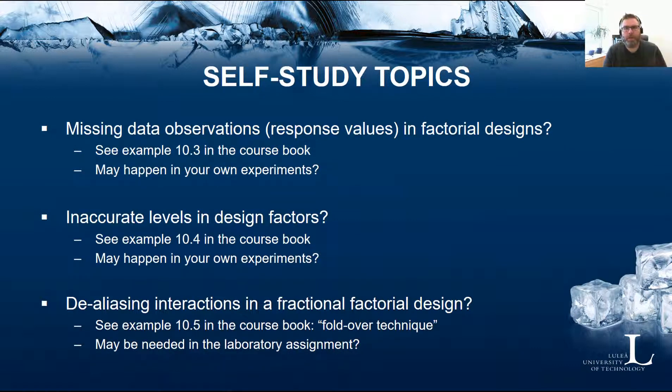Finally, some important self-study topics of chapter 10 in the book. First, what happens when you have a missing response value in a factorial design? I think you should study example 10.3 to see that the factorial design is quite robust against the number of missing values, if the number of missing values is quite small, like one missing value. Another important example is what happens when it is difficult to keep the factor settings exactly at the chosen levels or the planned levels. Take a look at example 10.4.